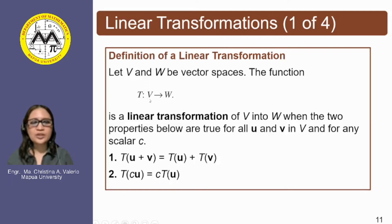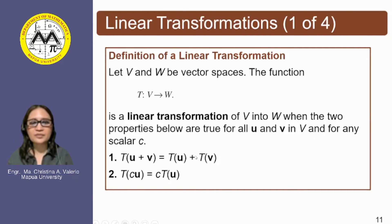The function T, which maps a vector space V into the vector space W, is a linear transformation of V into W when the two properties below are true for all u and v which are vectors in V and for any scalar c. Number one: the transformation of u plus v is equivalent to the transformation of u plus the transformation of v. The image of cu is equivalent to c times the image of the vector u.